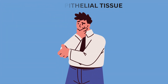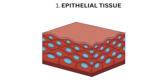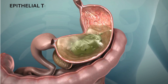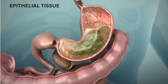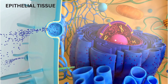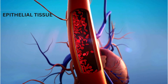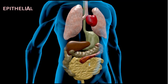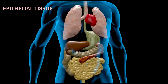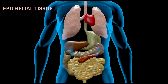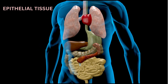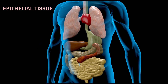Epithelial tissue is a type of tissue that covers the surfaces and lines the cavities of the body. It serves as a protective layer and performs various functions such as absorption, secretion, sensation, and transportation. Epithelial tissues are tightly packed and are typically found on the body's surfaces, both internal and external. There are several types of epithelial tissues, each adapted to specific functions.